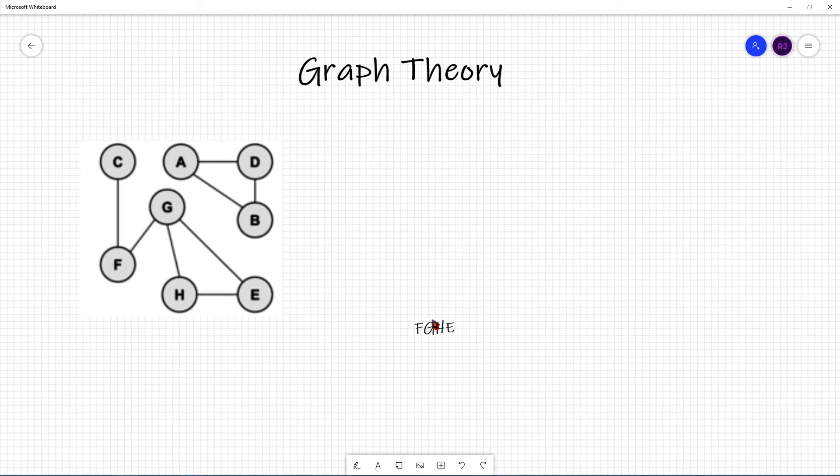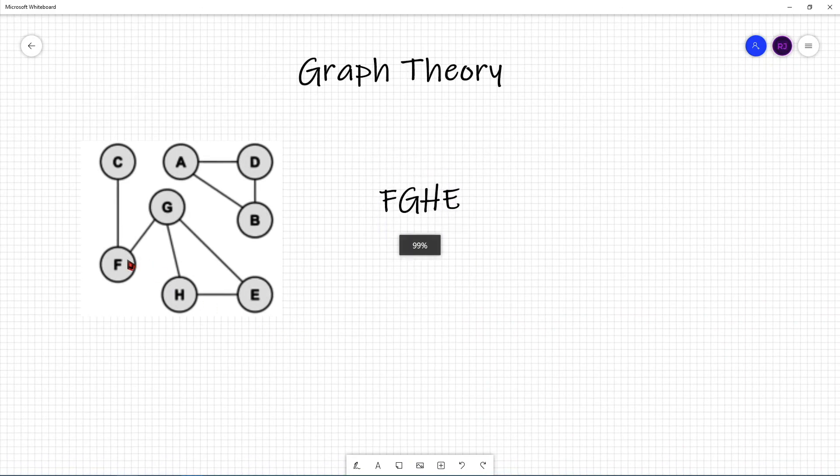Let's talk about it. The reason why this is a path is because if you start at vertex F, then there's an edge which can take you to vertex G, an edge which can take you to vertex H, and an edge which can take you to vertex E. Another example would be ADB. You can go from vertex A to vertex D, and then from vertex D to vertex B.